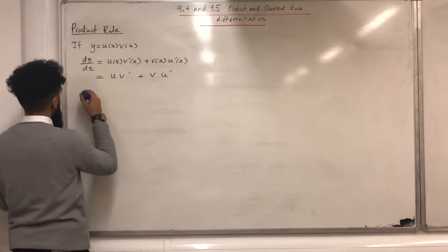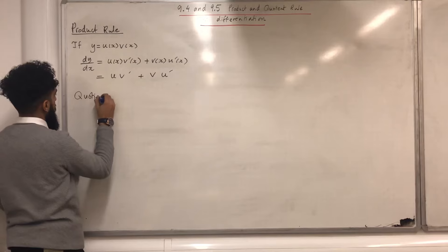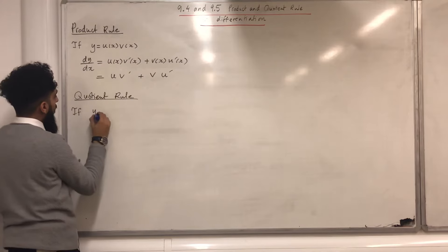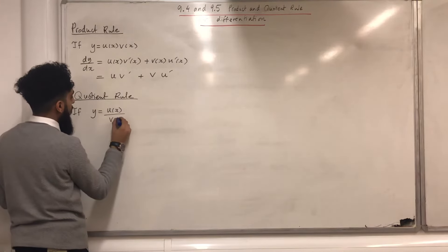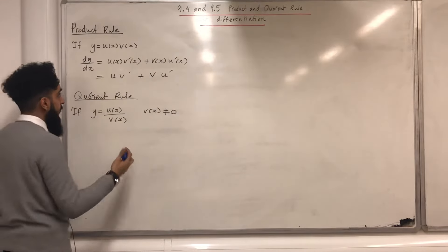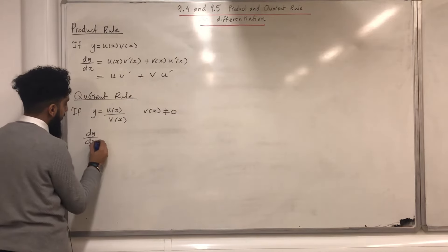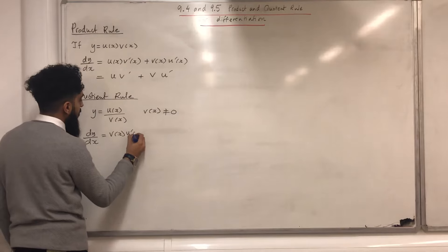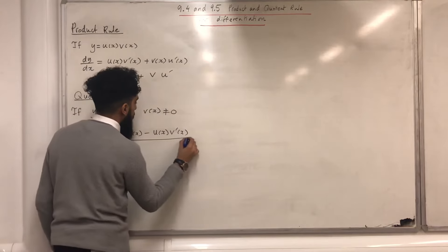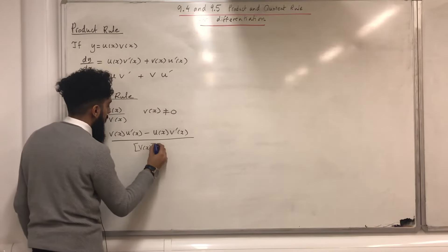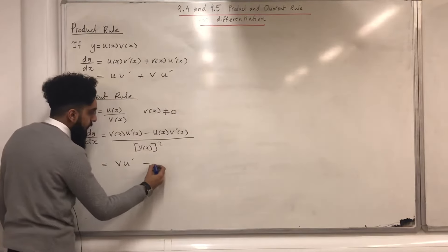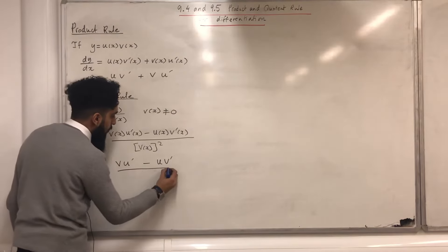The next rule is the quotient rule. If y is equal to u(x) divided by v(x), where v(x) is not equal to 0, and u(x) and v(x) are both functions in x, then dy/dx is given by v(x)·u'(x) minus u(x)·v'(x) all over v(x) squared. In short, we can write v·u' minus u·v' all over v squared.